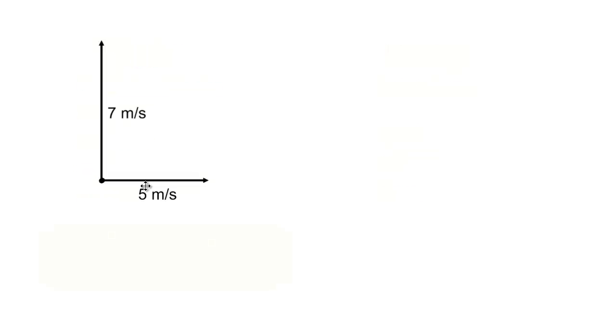Here is an example of two vectors at 90 degrees to each other. This could be a boat that is trying to travel across a river at 5 metres per second, and as it does so, is experiencing a current down the river of 7 metres per second.